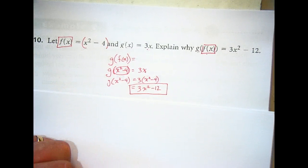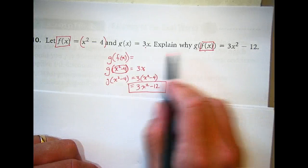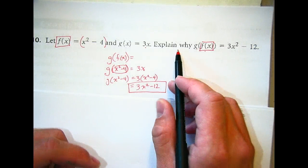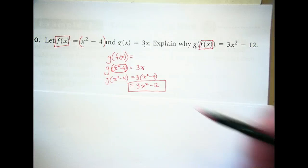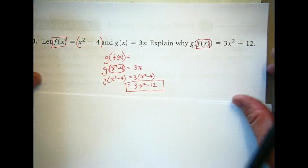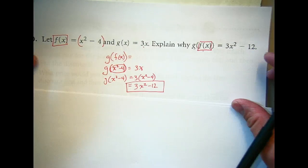And there are times when you're going to have to do that because you can't get a specific value, a numeric value out. So you're going to have a variable in there and that's okay. Any questions? Well, it's explaining why, right? So in this one, showing the work would be more of your explanation.